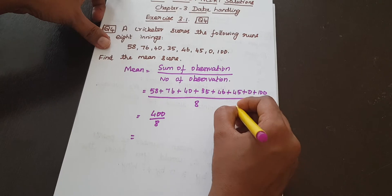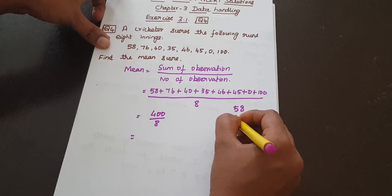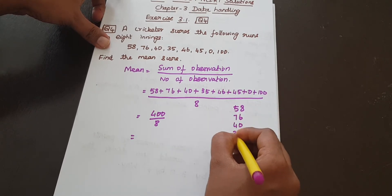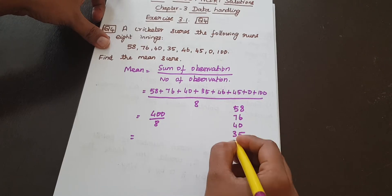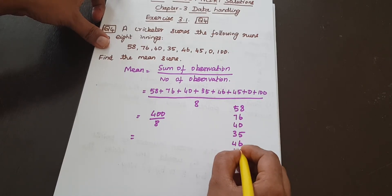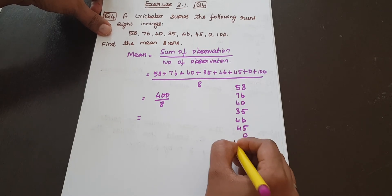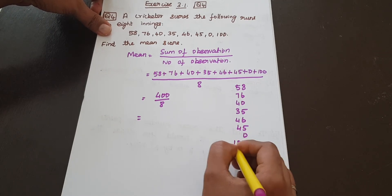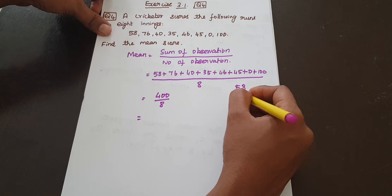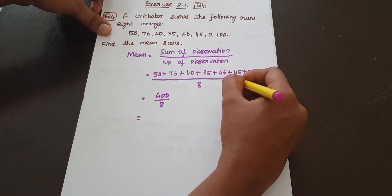Let's verify the addition: 58, 76, 40, 35, 46, 45, 0, 100. Adding step by step: 20, 14, 22, 23, 33. The total is 400.